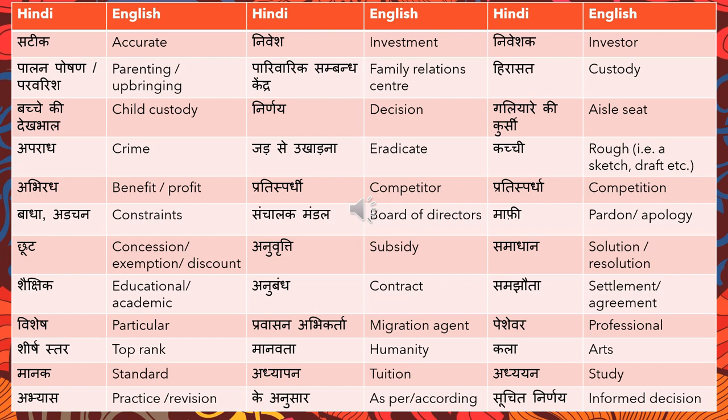The first word is 'Satik,' which means accurate. 'Nivesh' is investment; 'Nivesh Karna' means to invest; 'Niveshak' is the one who invests — that is, an investor. 'Palan Poshan' or 'Parvarish' means parenting or upbringing. For example: your upbringing has been very good — 'Aapka Palan Poshan bahut accha raha hai.'